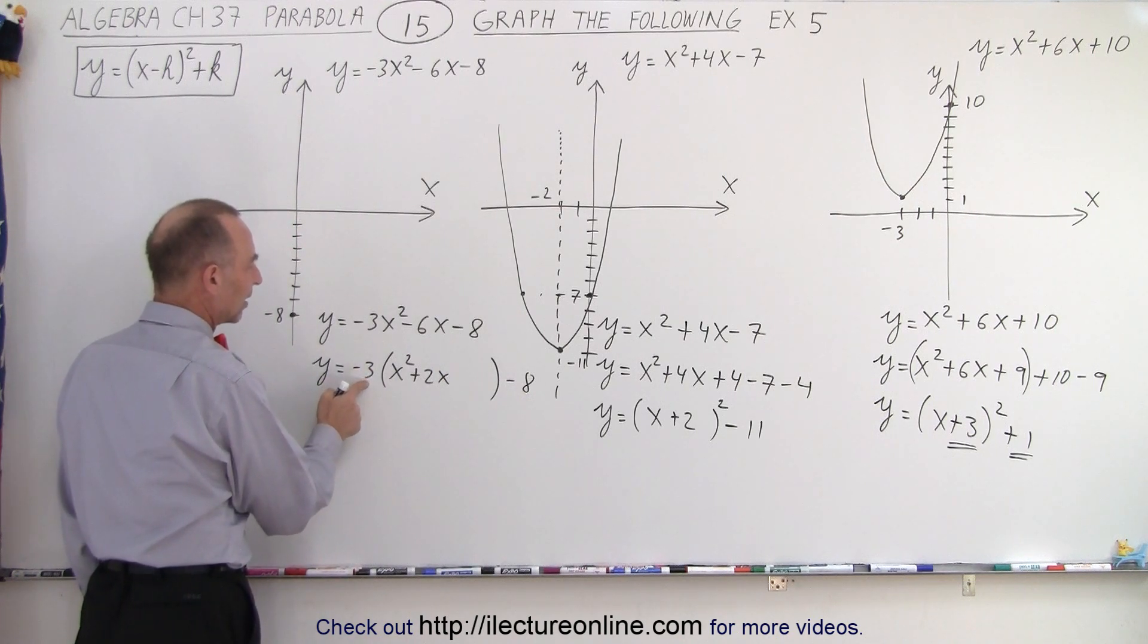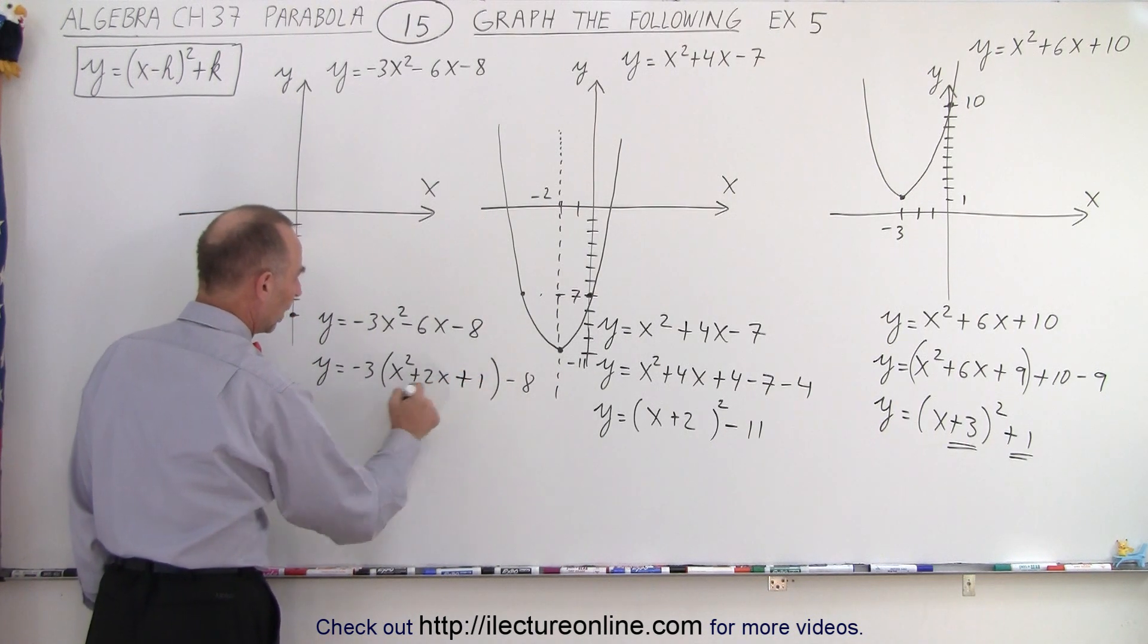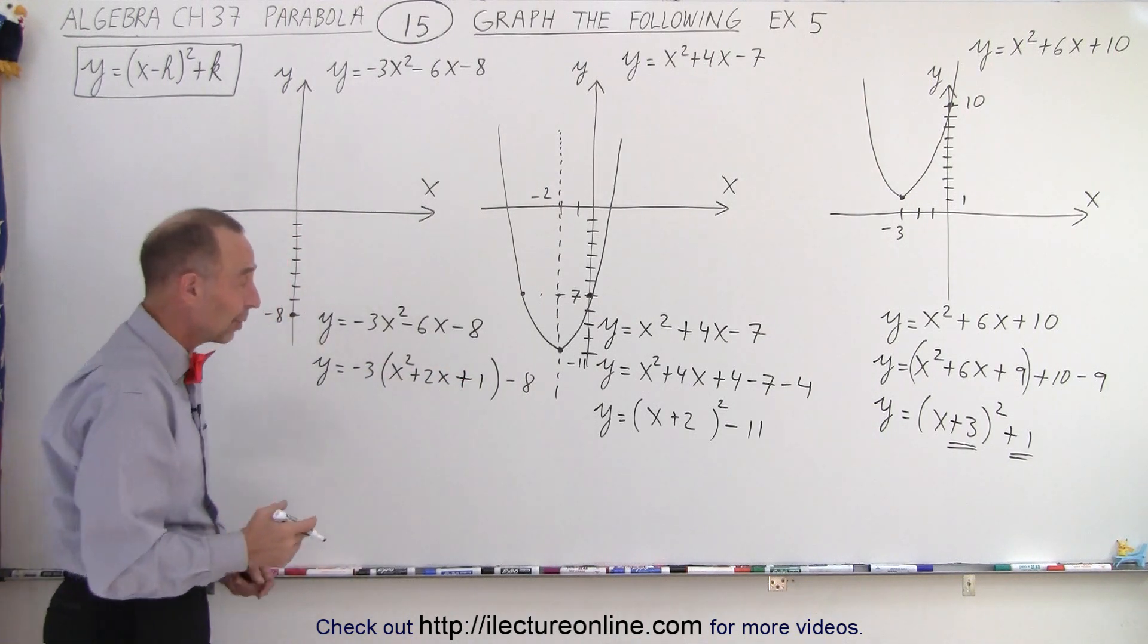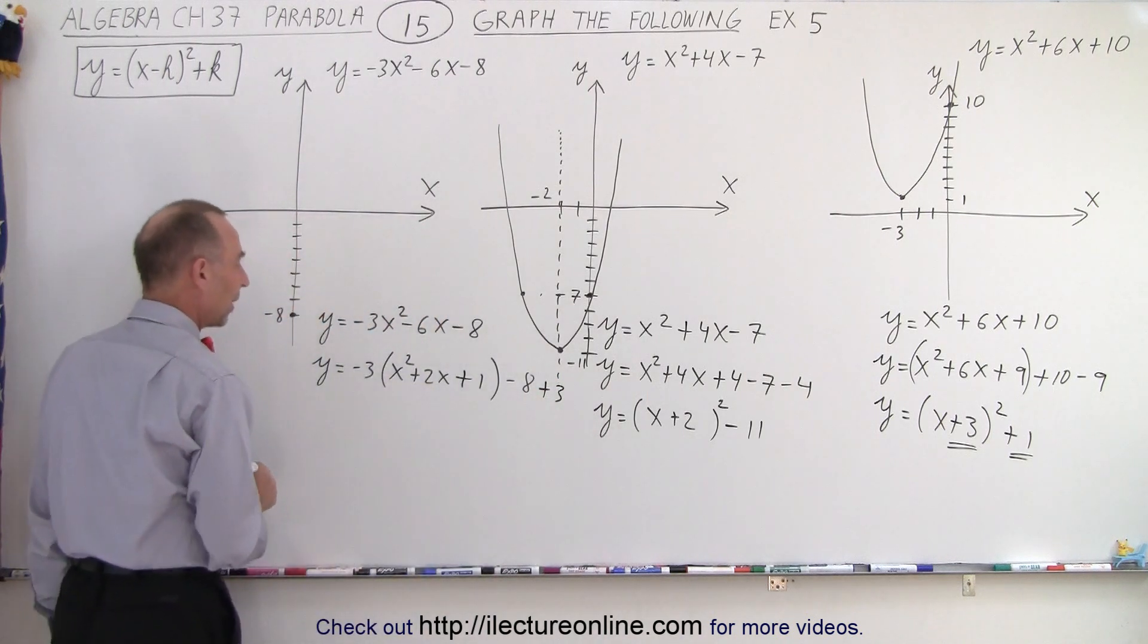So by factoring out a negative 3, it makes everything a lot easier to work with. I take half of this and square it. Half of 2 is 1 squared, I get plus 1. But negative 3 times plus 1 is negative 3. That's like adding a negative 3. That means I have to add a positive 3 as well to compensate for that.